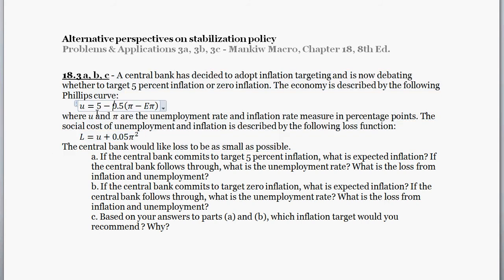So the Phillips curve is: current unemployment equals five minus one-half times the deviation between realized inflation and expected inflation. Our loss function is: loss equals unemployment plus 0.5 times the inflation rate squared.